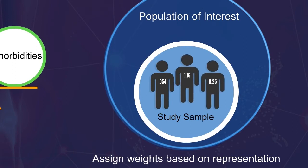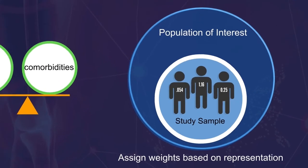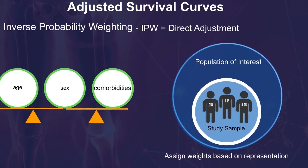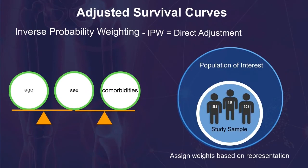The creation of inverse probability weights as a separate step prior to the adjustment allows you to directly assess if the baseline characteristics are balanced in the pseudo-population. This is a valuable diagnostic assessment of the validity of the IPW adjustment.